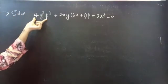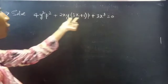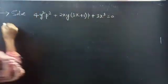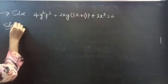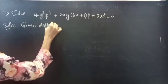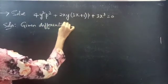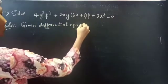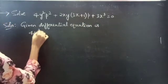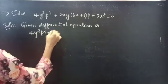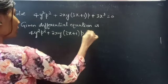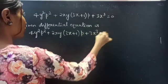Solve: 4y squared p squared plus 2xy(3x + 1)p plus 3x cubed equals 0. The given differential equation is 4y squared p squared plus 2xy(3x + 1)p plus 3x cubed equals 0.